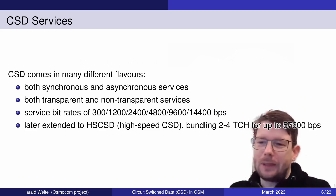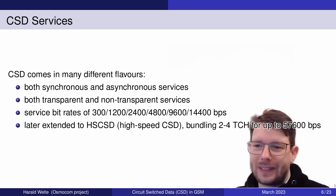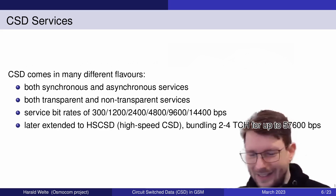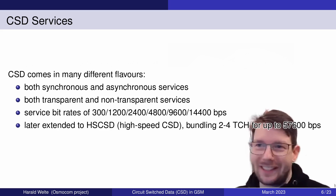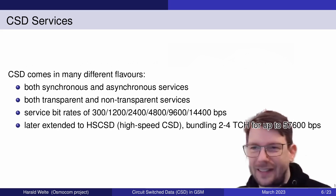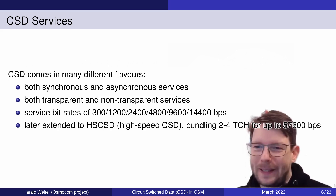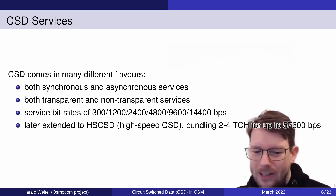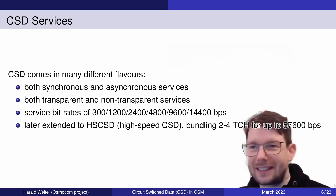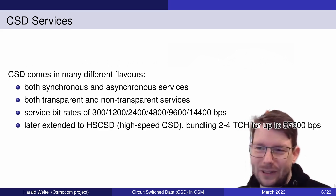In GSM, everything is services. You have tele-services and bearer services, and circuit switch data is not just one type of call but has multiple different flavors. Think of it like GSM voice calls with full rate, half rate, enhanced full rate, AMR, and AMR wideband — many different codecs. Likewise, for circuit switch data there are many different flavors spanning multiple dimensions of differentiation.